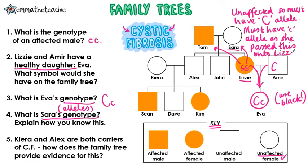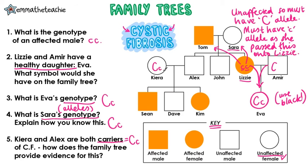Try to use names in your answers if they've helped you work out the answer. So she's big C, little c. And finally, Kyra and Alex are both carriers of cystic fibrosis. How does the family tree provide evidence for this? Just a reminder: carrier means they've got one recessive allele and one normal allele, so they're both big C, little c.